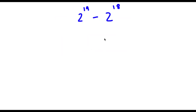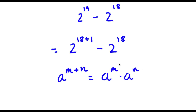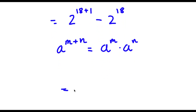Alright, for the next problem I have 2 to the power of 19 minus 2 to the power of 18. To solve this, I'm going to first rewrite 19 as 18 plus 1, so now I have 2 to the power of 18 plus 1 minus 2 to the power of 18. Using the property that a to the power of m plus n equals a to the power of m times a to the power of n, I get 2 to the power of 18 times 2 to the power of 1, minus 2 to the power of 18.